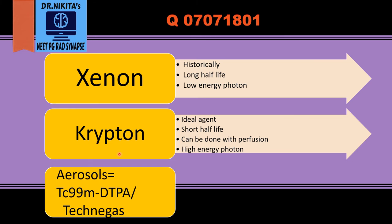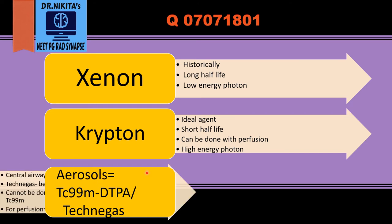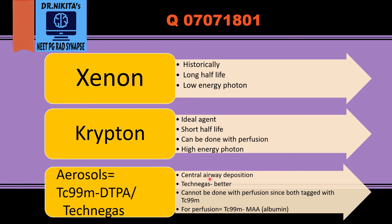We can also use aerosols, which are liquid or solid particles suspended in gas. These include technetium-99m DTPA and techni-gas. Techni-gas consists of nanoparticles of carbon or graphite. With aerosols, there is central airway deposition, so peripheral ventilation may be difficult to assess. Techni-gas is better than DTPA and gives images nearly as good as krypton.